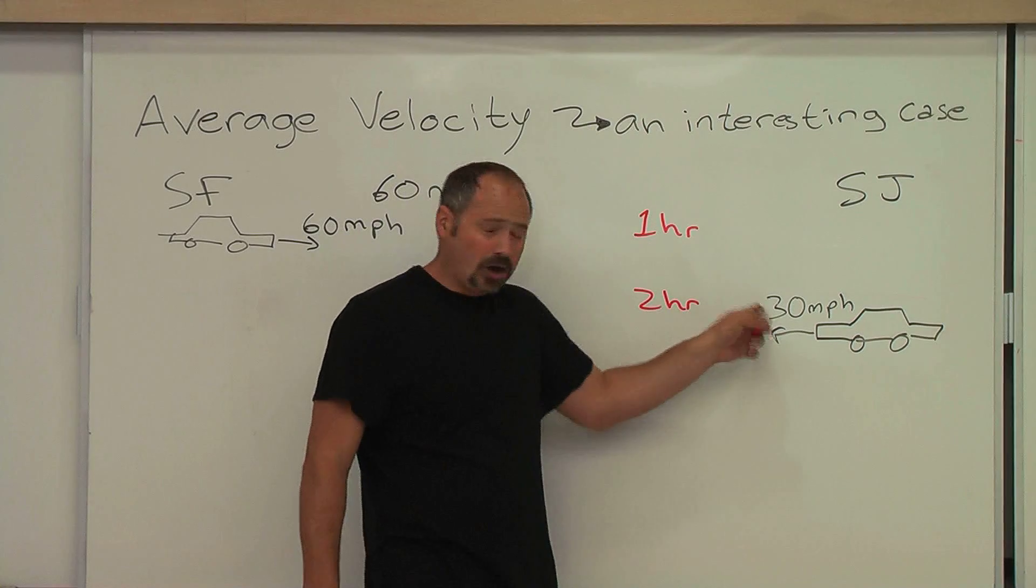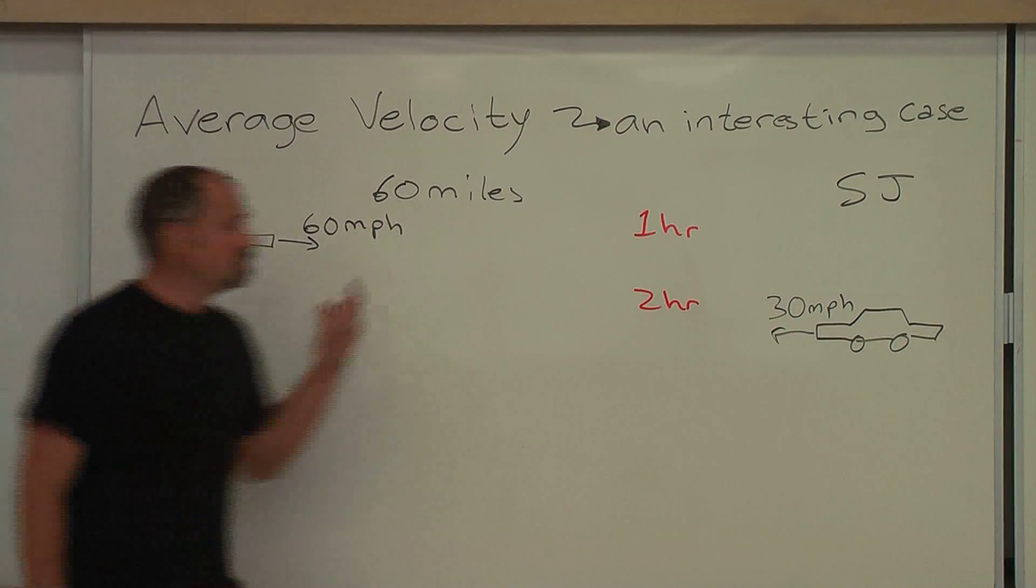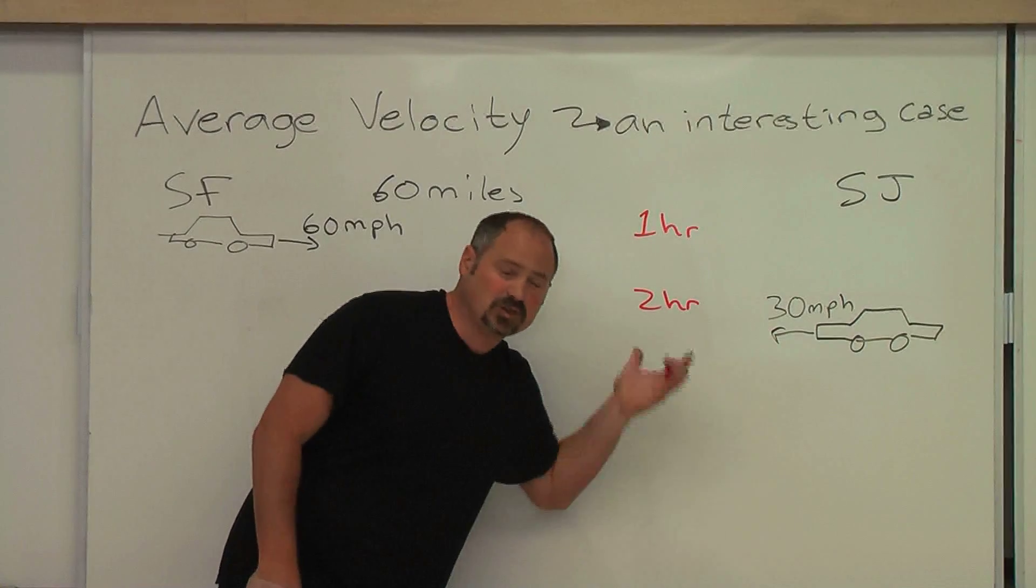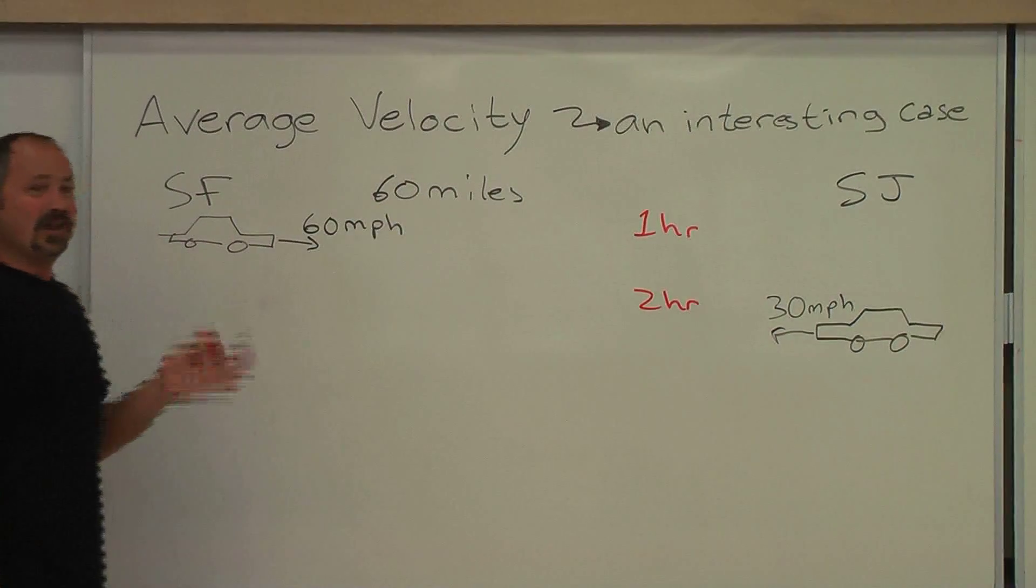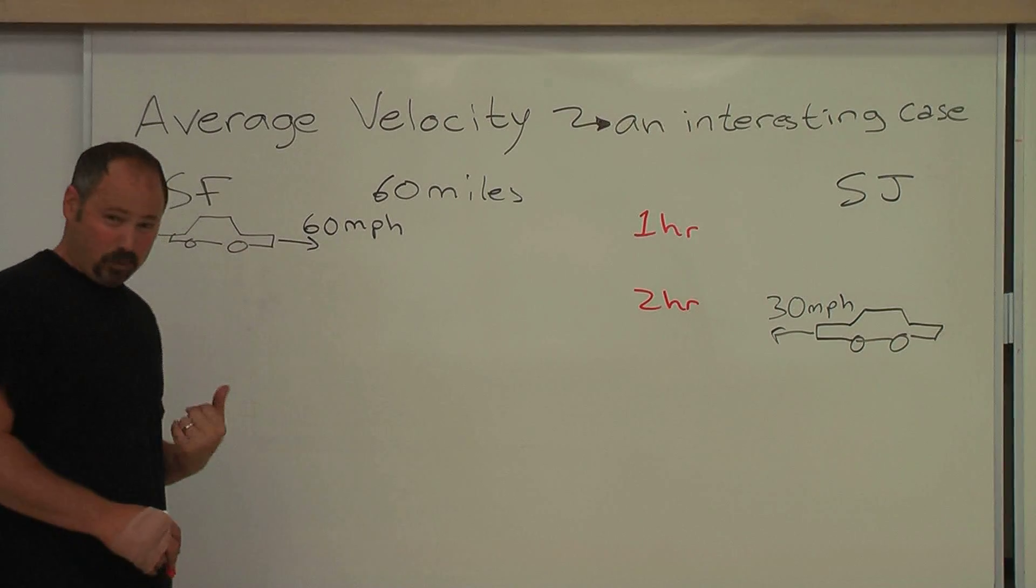You spent twice as long at 30 miles per hour as you did at 60 miles per hour. You spent more time at this lower speed, and therefore, your average should be tilted on the low side of 45.